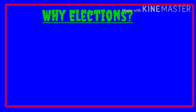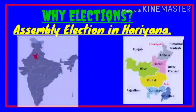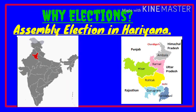Now let's start the lesson. Why elections? Under this topic, we will first discuss a story — the assembly election in Haryana. Let's hear the story of Haryana. The state of Haryana is situated near Delhi, Punjab, and even borders with Rajasthan. This story happened in 1987, around 30 to 33 years back.